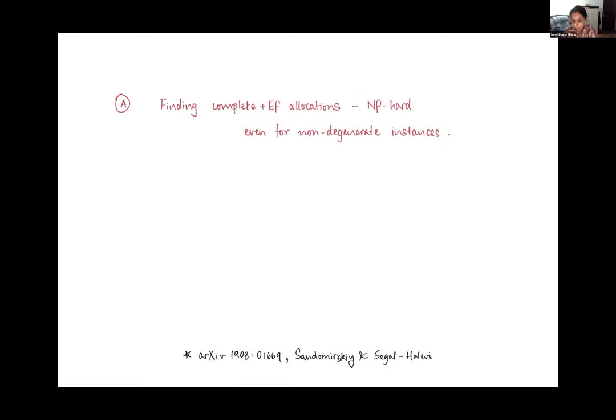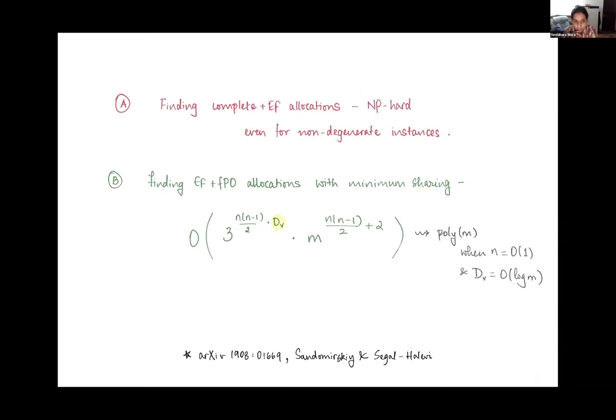It turns out that finding complete EF allocations continues to be hard, even for instances that are very low degeneracy, which would be the other end of the spectrum, where everything is not identical. But if we insist on EF allocations which are fractionally Pareto optimal, then we have an algorithm. This is, by the way, work that came out last year on the archive by Fedor Sandomirsky and Edel Seigelhalvi. The situation here is that if you look at the form of the running time, it's quite nice when the number of agents is fixed, but it kind of blows up if they're not.